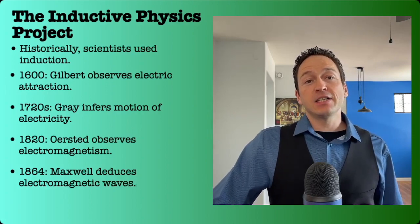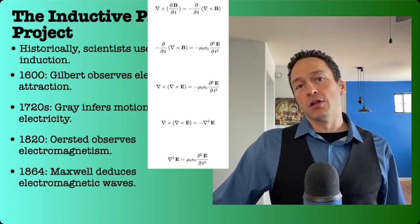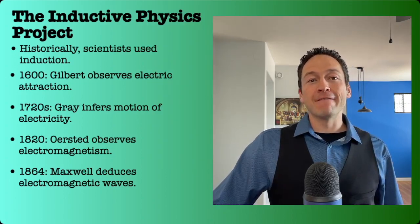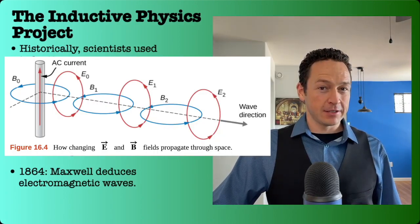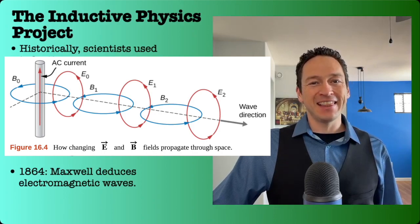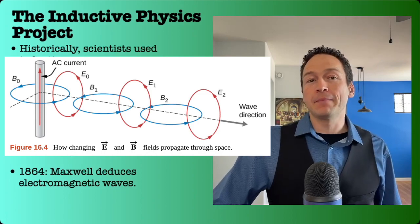And in 1864, by making deductions from these laws and other laws of electricity and magnetism, Maxwell discovered that vibrating charge would produce waves of electricity and magnetism. Waves which were later proven to be the same as light, since further experiments showed that they had all of the properties of light.